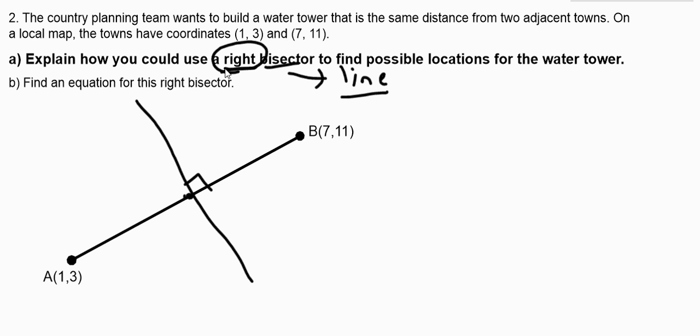So right tells us that it's perpendicular and bisector tells us that it cuts it in two. And that's what the midpoint does as well. So we need to use a right bisector to find locations for the water tower. Now hopefully you learned in class that every point on the right bisector is exactly equidistant from the ends of the line segment. And what we need to do in part A is explain that.